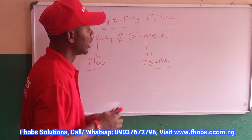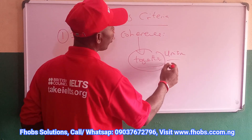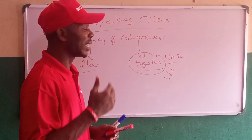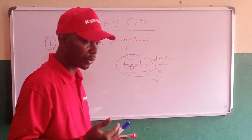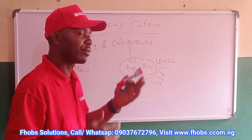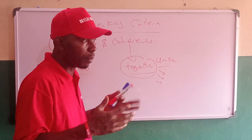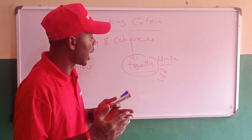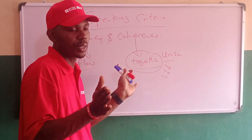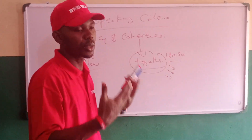Coherence has to do with the unison between your point — when you give a point, when you explain that point, and when you try to give an example or illustration. So it simply means if you give a point and then you try to explain it or give an illustration, everything should mean the same thing and support your idea, your opinion. Not like when you give a statement and your explanation is going one way, your statement another, and the example is a different thing — that means your point is not coherent.